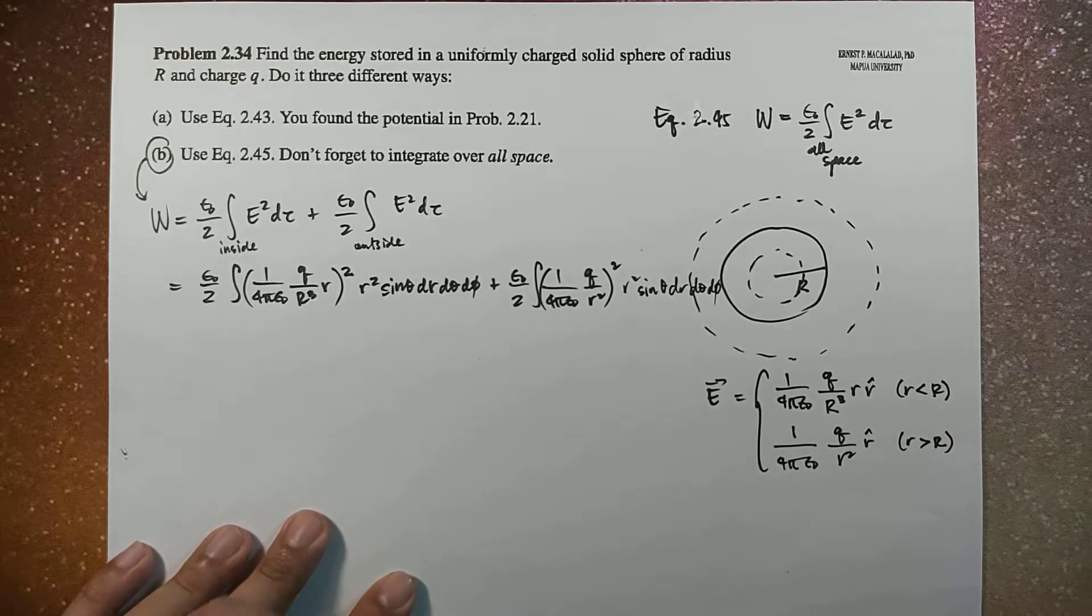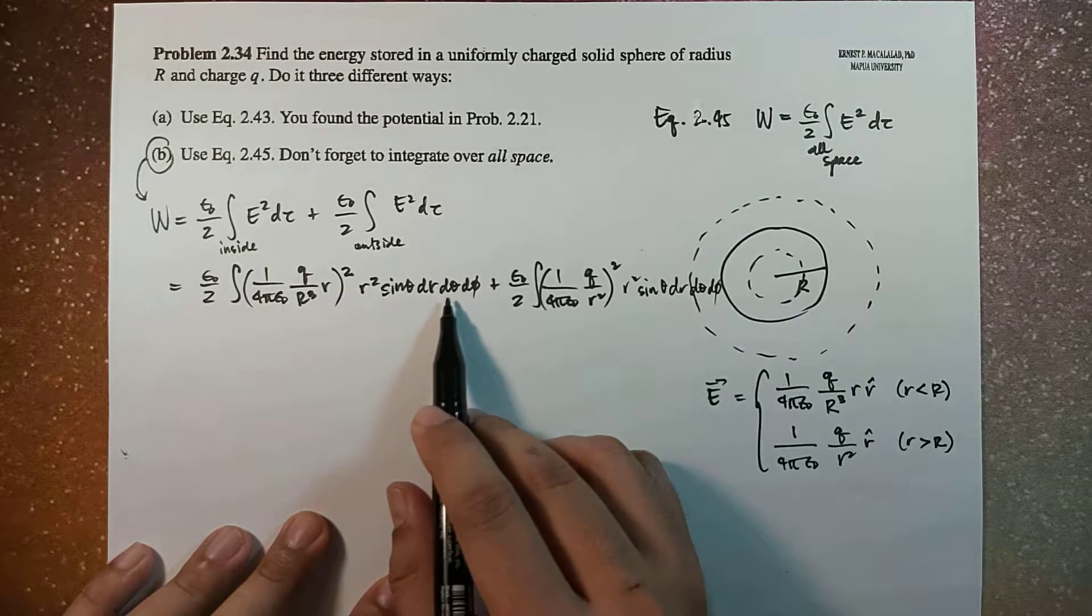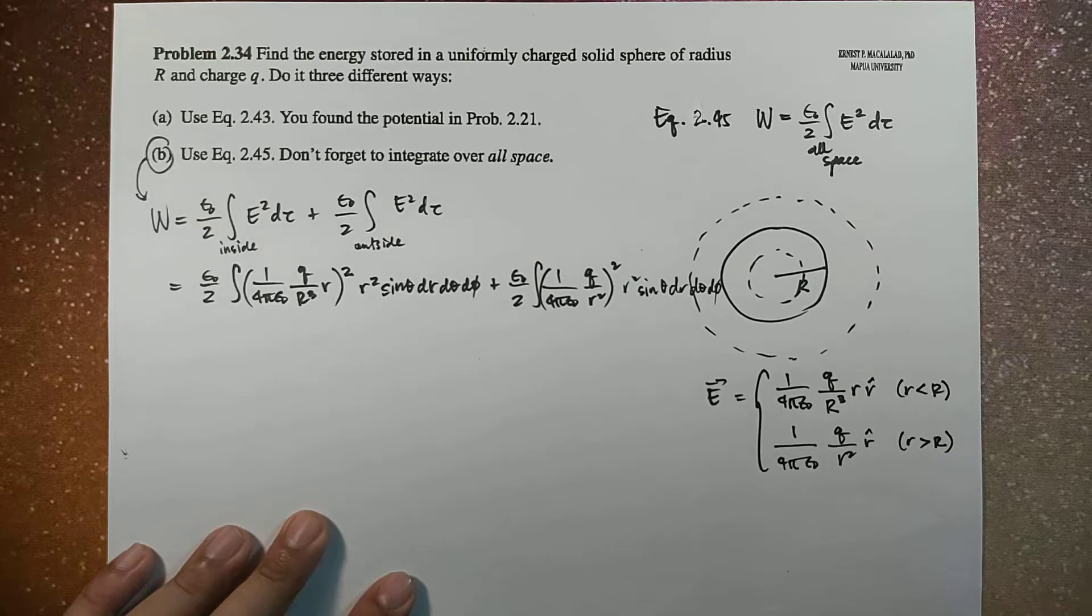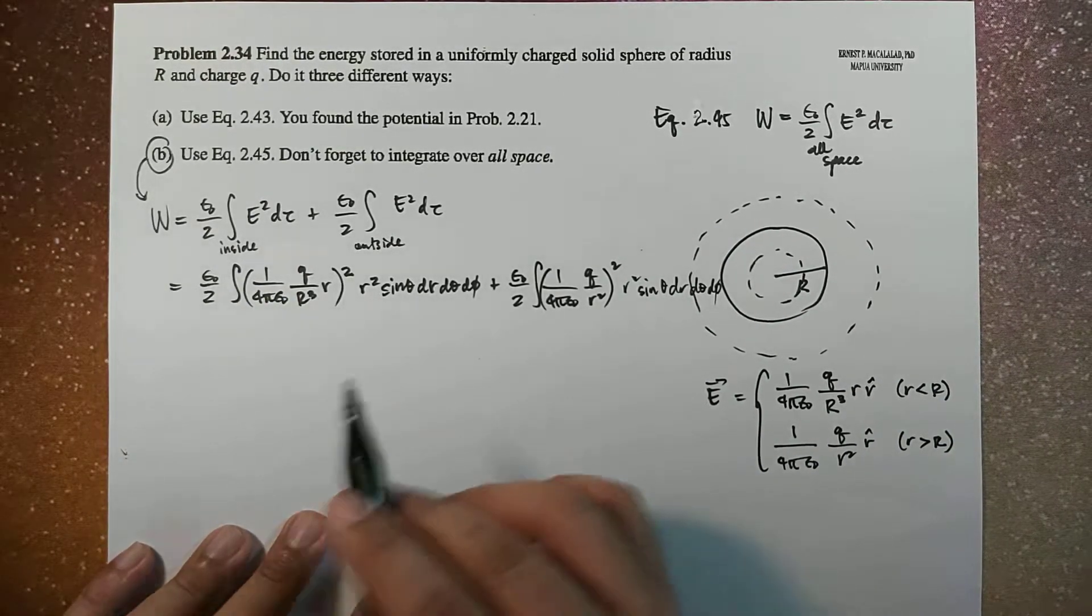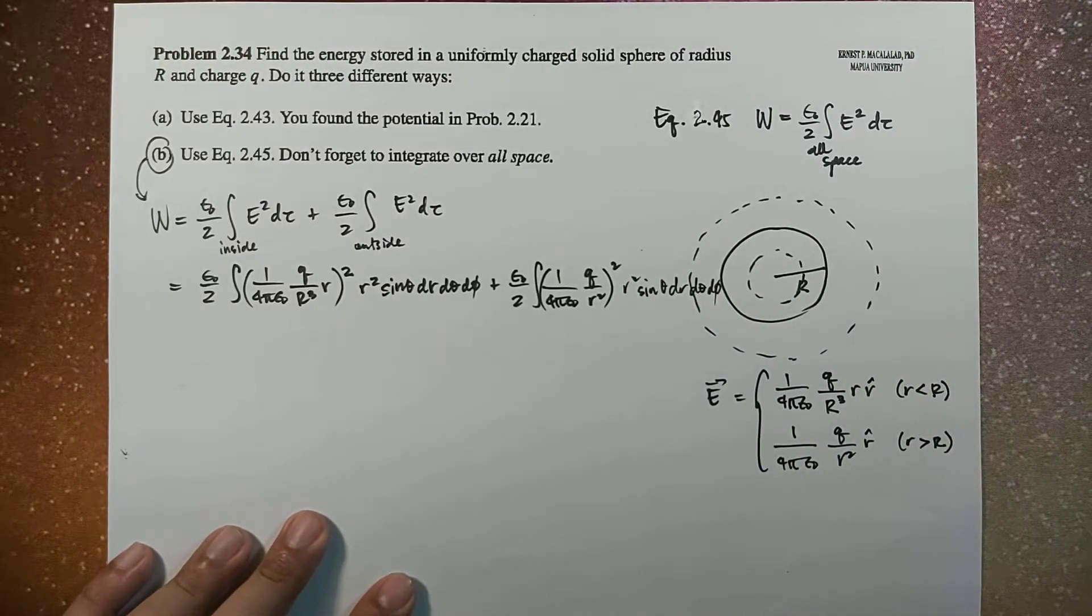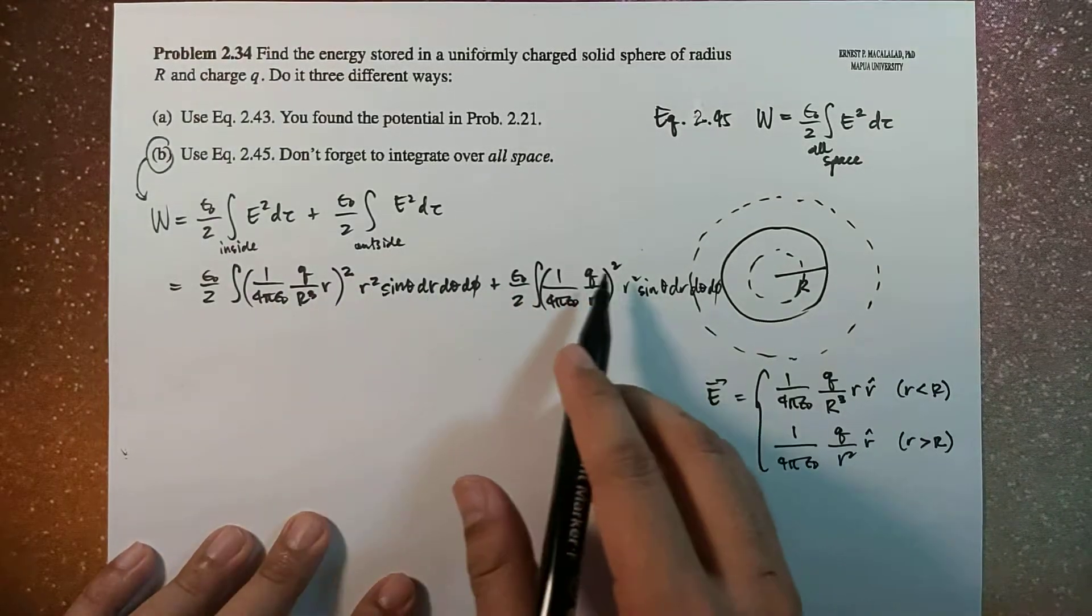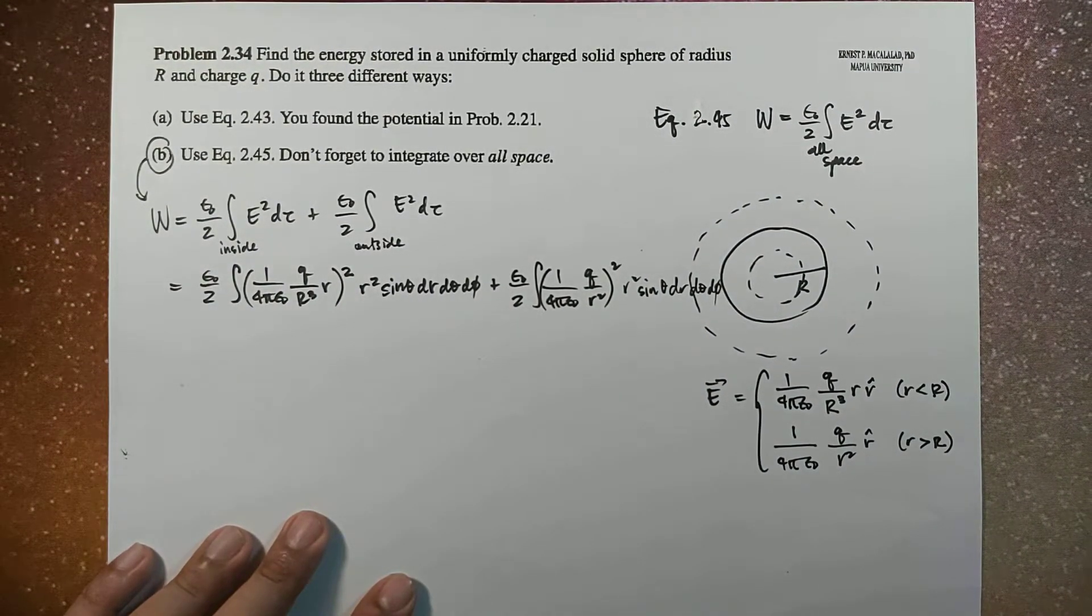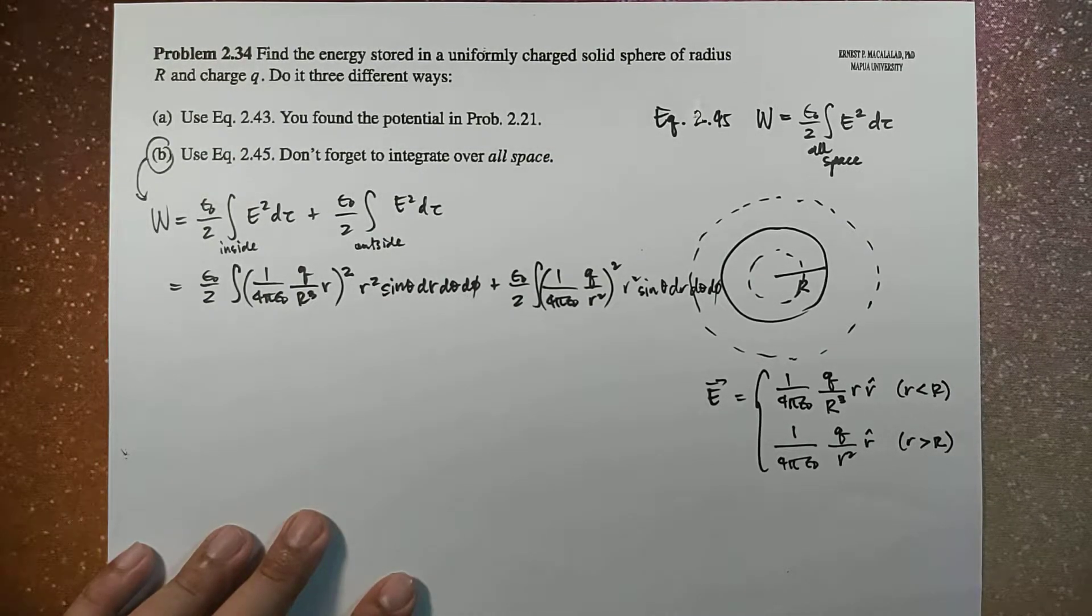Okay, so what will happen there is that the theta and phi integration will just yield 4 pi. 1 over 4 pi epsilon naught for both terms will also be taken out. Q squared will also be taken out of the integral.